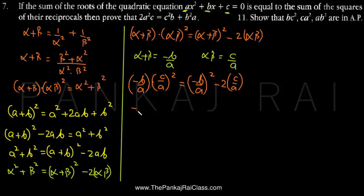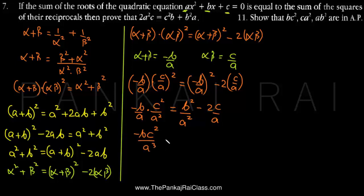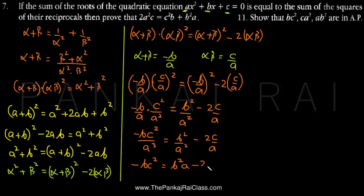Expanding, this gives −bc²/a³ = b²/a² − 2c/a. The highest power of a in the denominator is 3, so multiplying both sides by a³: the left side becomes −bc², and the right side becomes b²a − 2a²c.